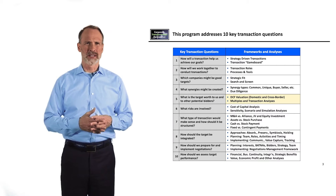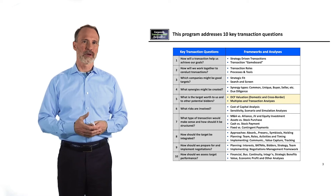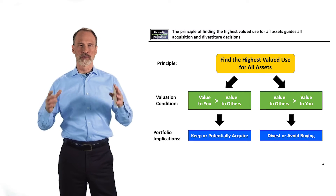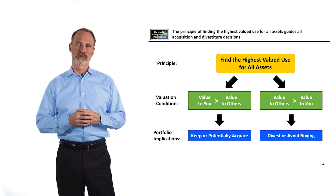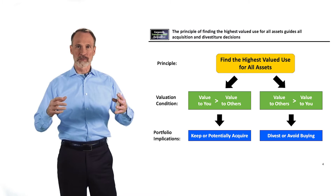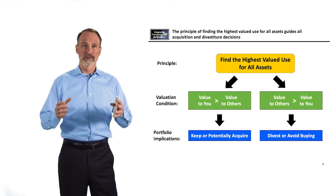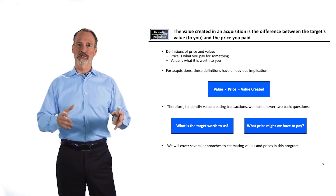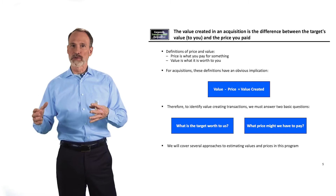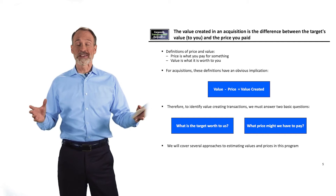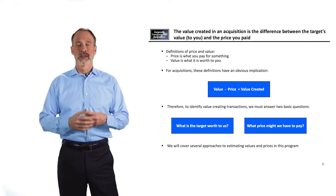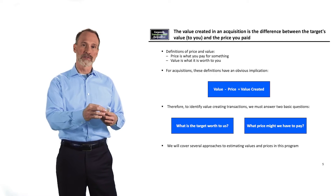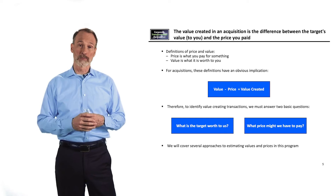We're now moving to question five: what might the company be worth to us and to other potential buyers? We'll look at DCF and multiples approaches. The core principle is to find the highest value use for all assets — if something is worth more to you than to others, focus on buying it; if worth more to others, divest or avoid buying it. Price is what you pay; value is what it's worth to you. Value creation is the difference between value and price, requiring two calculations: what's it worth to us, and what price might we have to pay.